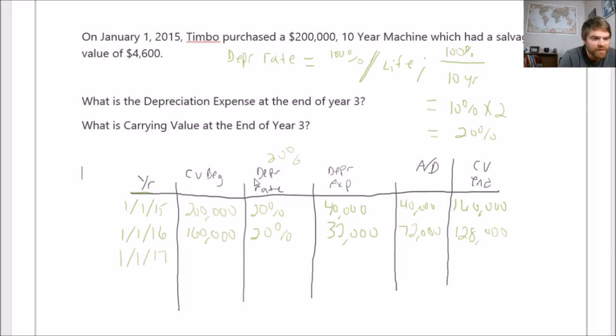So 1/1/17, move that down, now it's $128,000, 20%. All right, so now we're at $25,600. Add that to our accumulated, now our accumulated here is going to be $97,600.